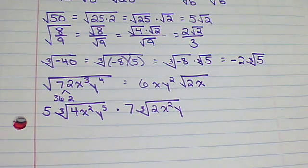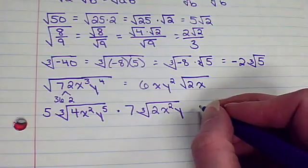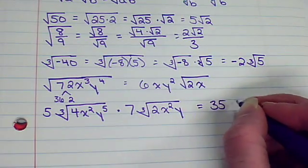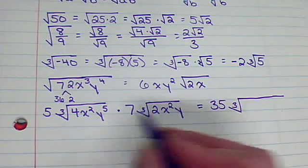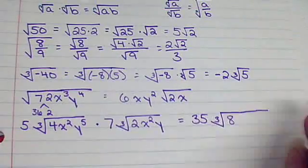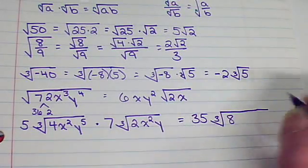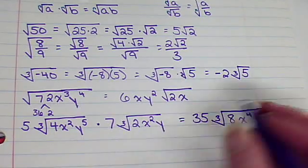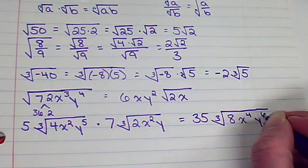Well, I can multiply them together. Now, the numbers that are on the outside, they multiply together. And I would get 35 cube roots of, let's see what we have. We have 4 times 2, which is 8. Now, x² times x², that's going to be x⁴. y⁵ times y is going to give me y⁶.